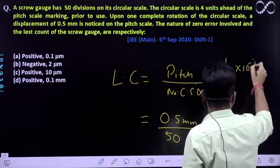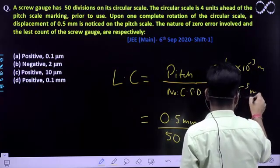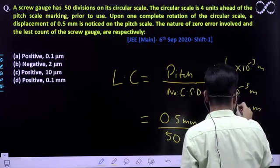So millimeter, milli is 10 to the power minus 3 meter, hai na, to ye ho jahe ga 10 to the power minus 5 meter. Isko further solve karayenge, to 10 micrometers ke barabar aa gaya hai ye.